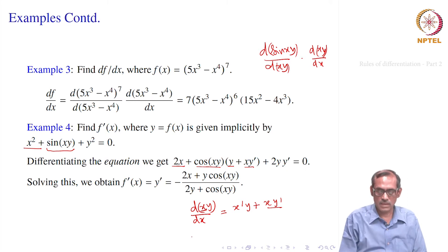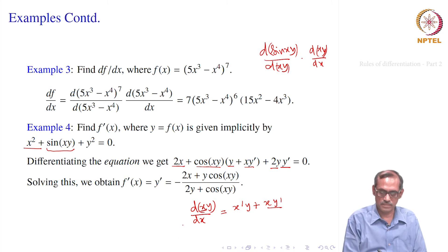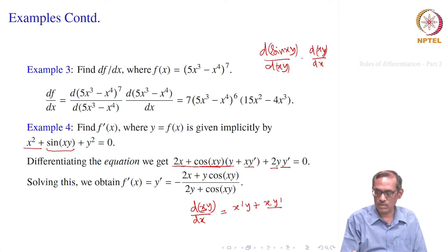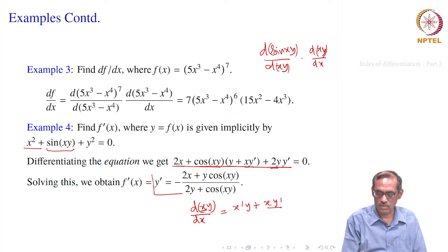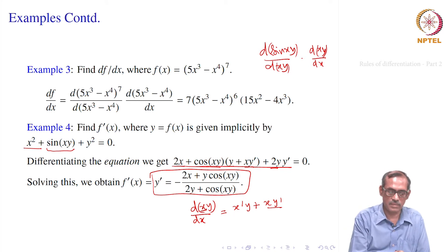Next we have y². So d(y²)/dx — again by chain rule: d(y²)/dy times dy/dx. So dy/dx is y′ and d(y²)/dy gives 2y. That gives us a new equation involving derivatives. We solve it for y′, keeping y′ on one side and all other expressions on the other side. We get y′ equal to minus(2x plus y·cos(xy)) divided by (2y plus cos(xy)). That is how we differentiate implicitly.